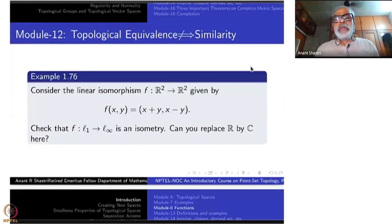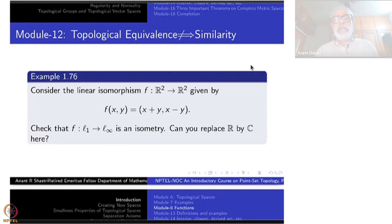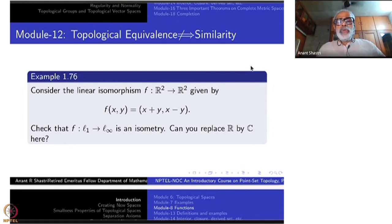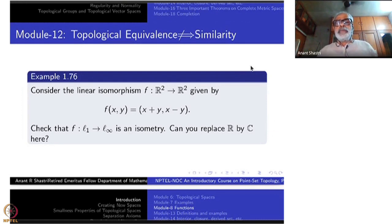Last time we studied the implication science the other way around, namely homeomorphism does not imply similarity, similarity does not imply isometry. We covered only one of them, namely similarity does not imply isometry. So today let us cover the other one: topological equivalence does not imply similarity, homeomorphism does not imply similarity.